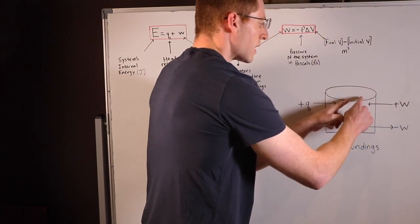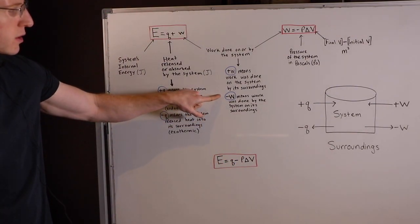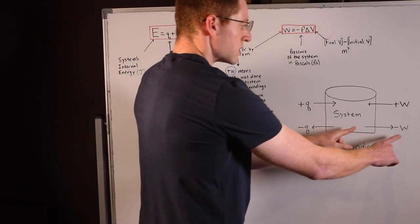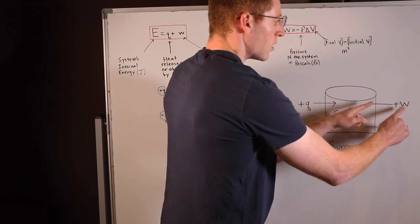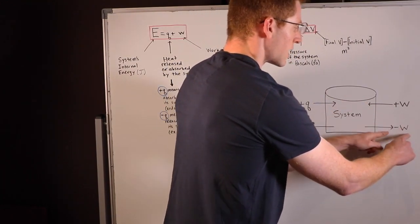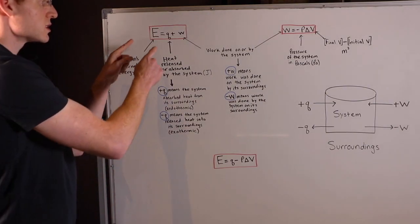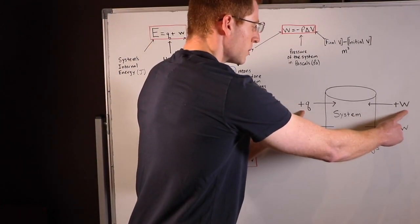Conversely, a negative W means work was done by the system on its surroundings. So you can see here it's the opposite. Here work was done by the system on its surroundings, and it lost energy. So you can see the two things that increase a system's internal energy are a positive Q or a positive W.